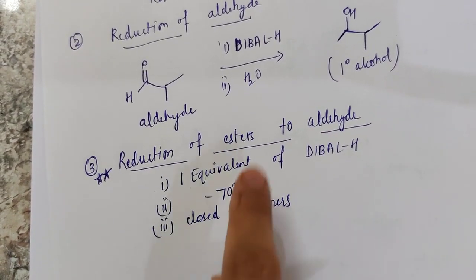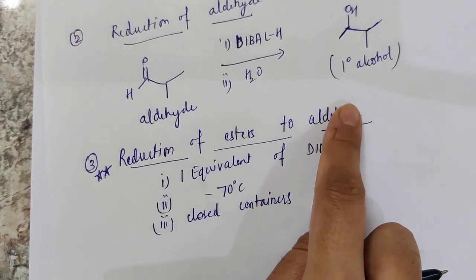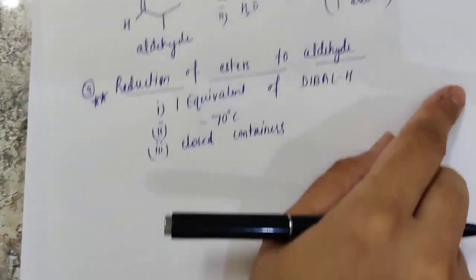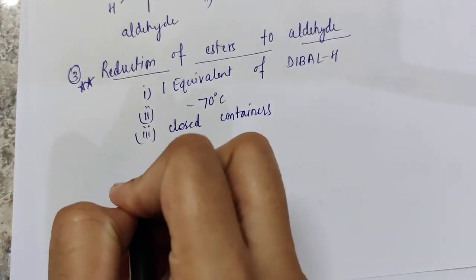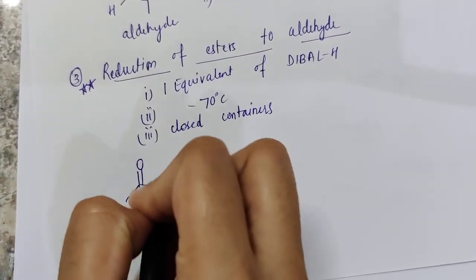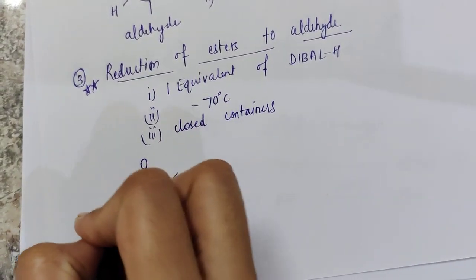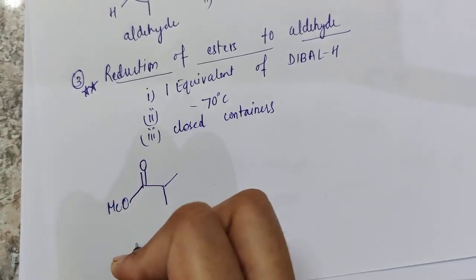Then the lid of the container needs to be closed throughout the duration of reaction. Then only esters will be reduced to aldehyde only and not any further. Let's take an example.